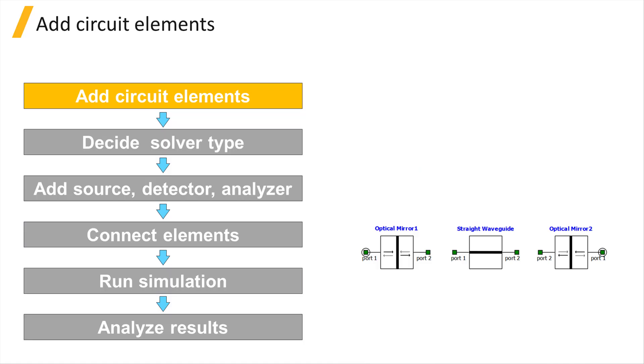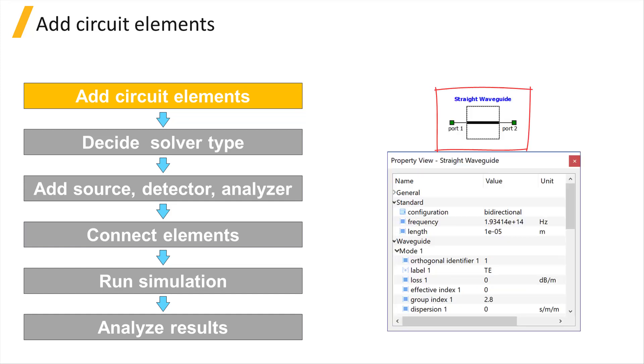The basic workflow when designing a circuit in Interconnect begins with adding the schematic circuit elements and setting the properties of the elements. For example, you can add a waveguide element and set the properties that characterize the waveguide such as the length, effective index, group index, and dispersion.